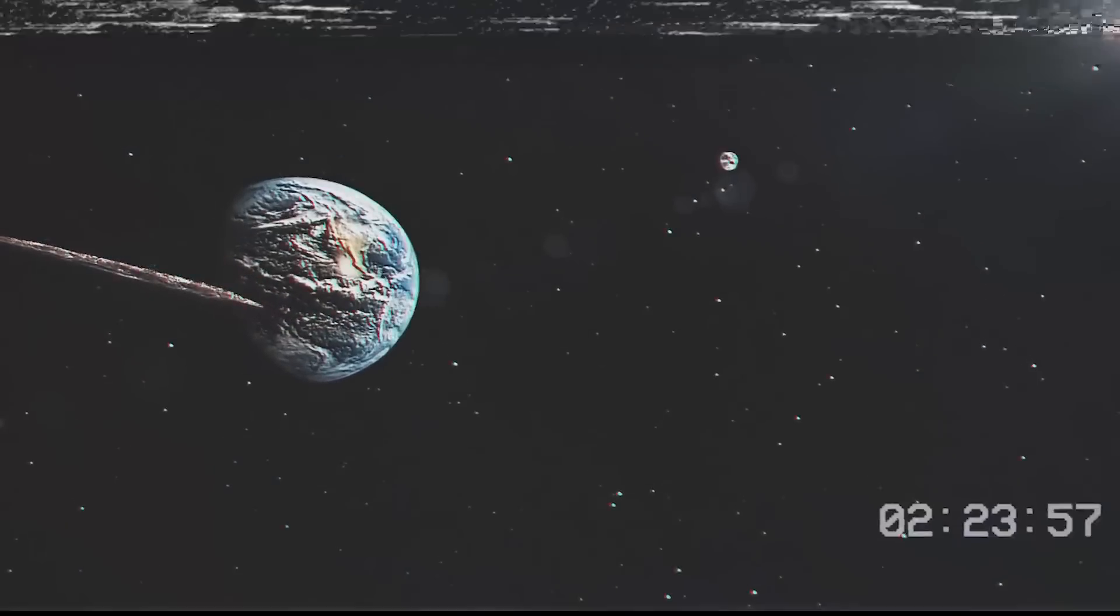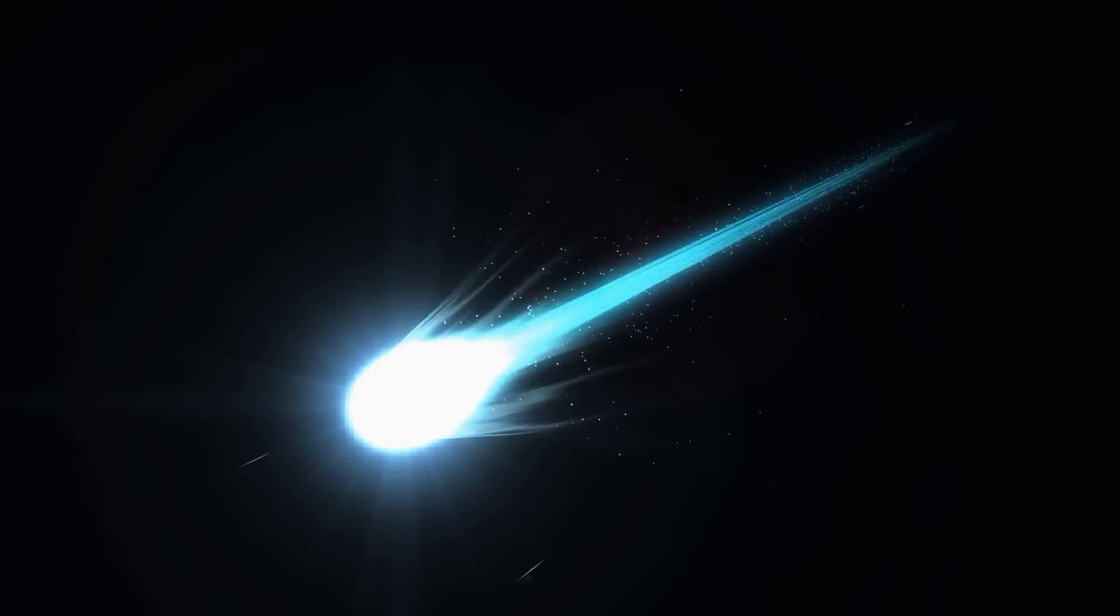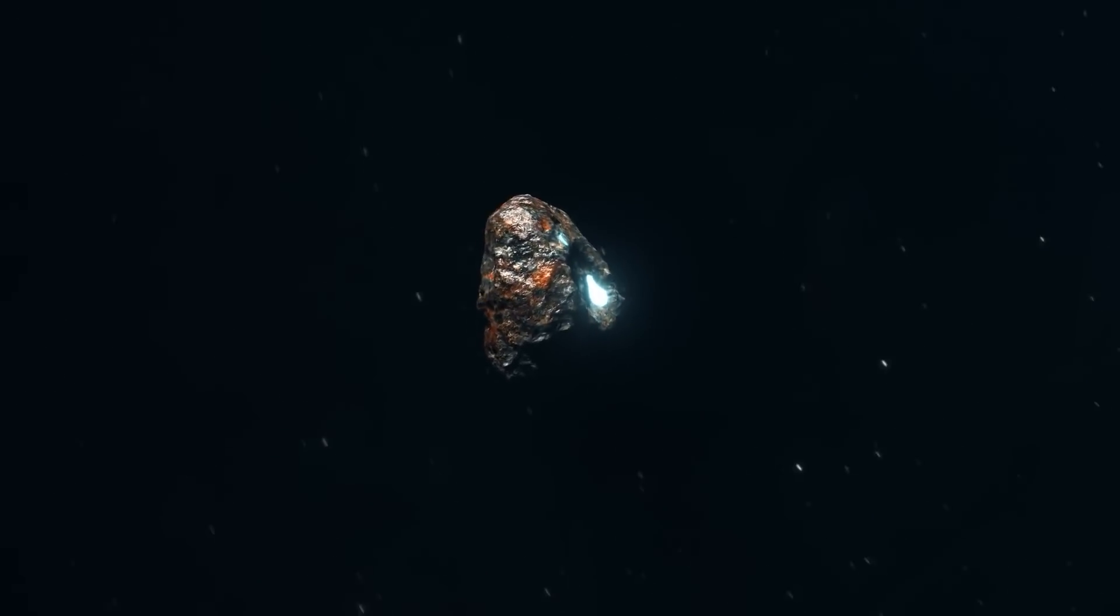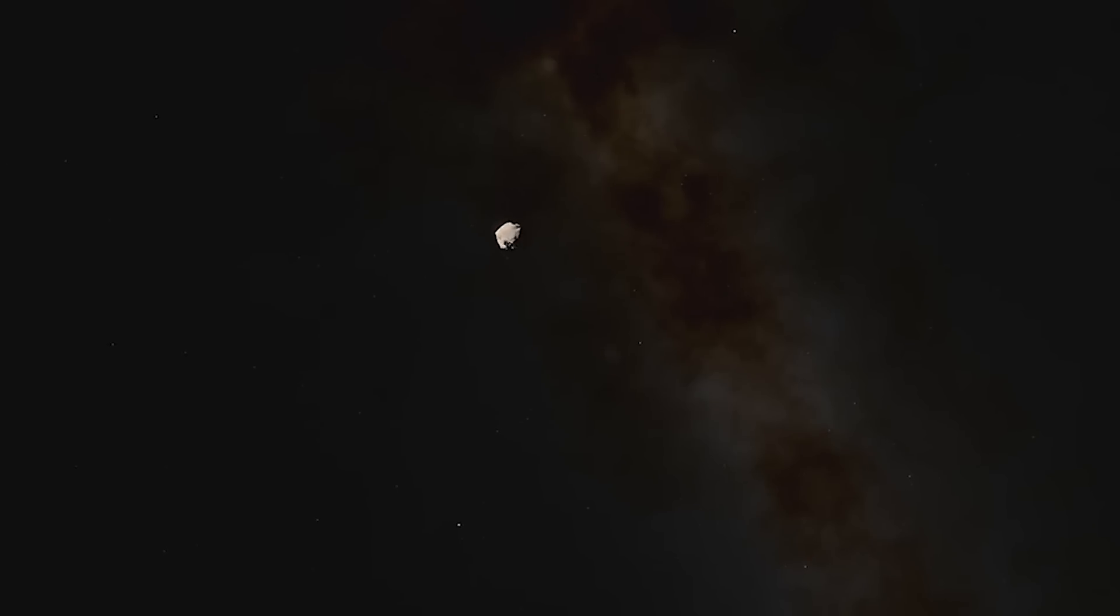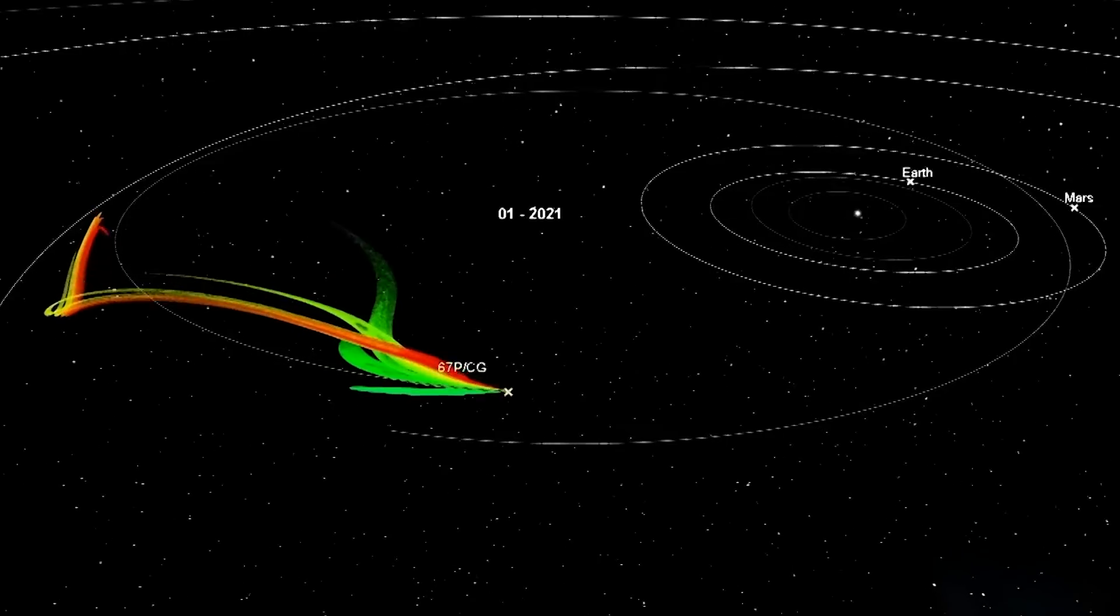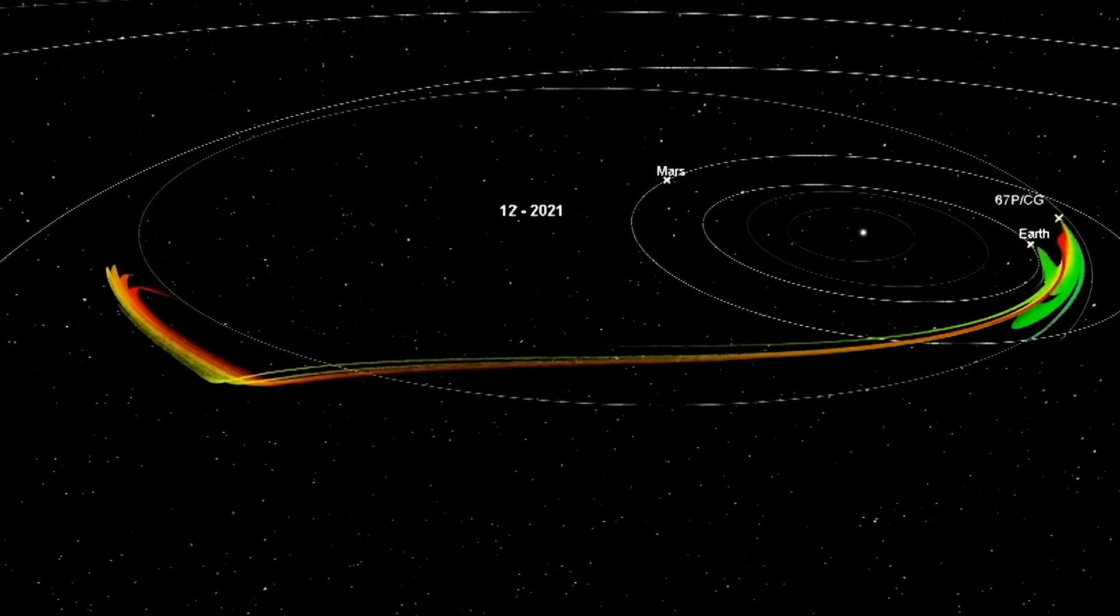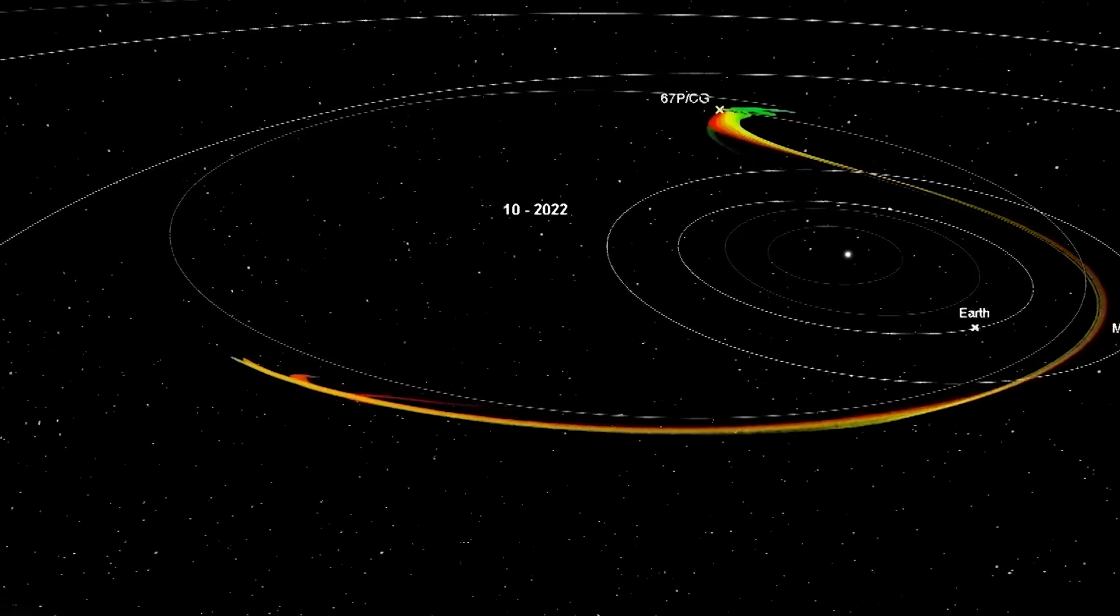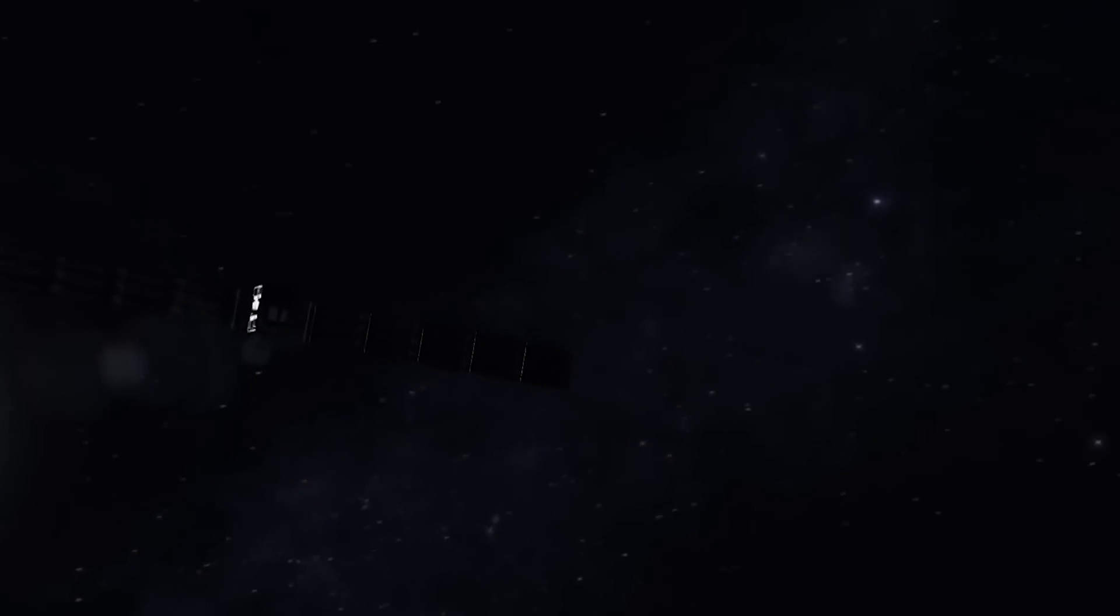What then could this visitor to our solar system be? Perhaps looking carefully at its features could give us an answer to where this visitor originated from or what exactly it is. Observations to ascertain Oumuamua's composition and shape were carried out using the VLT, the Gemini South Telescopes, and the Hawaiian Keck 2 Telescope, all very powerful telescopes.